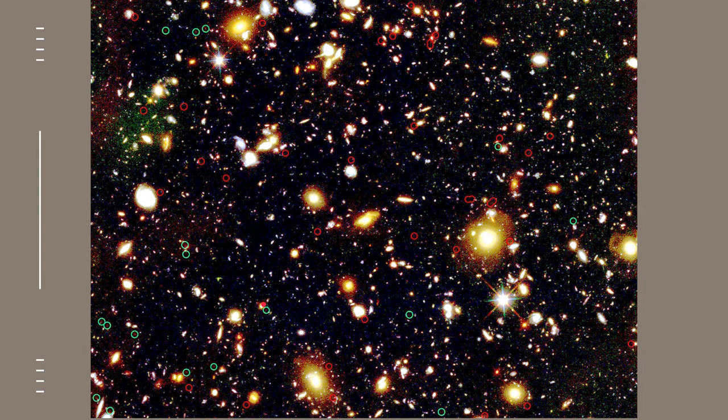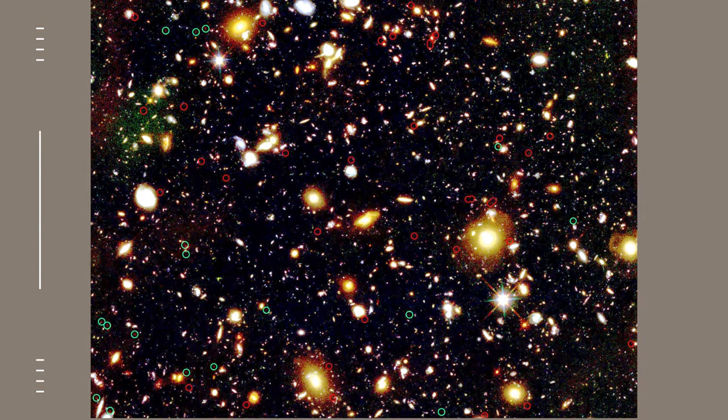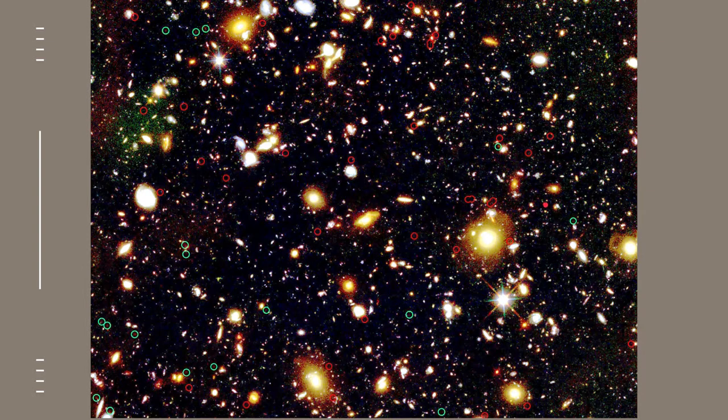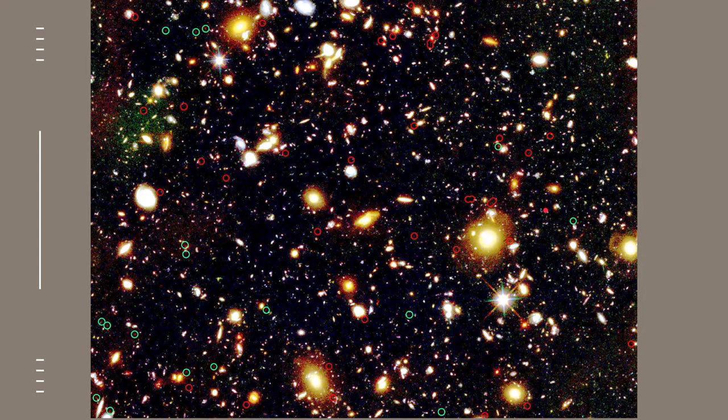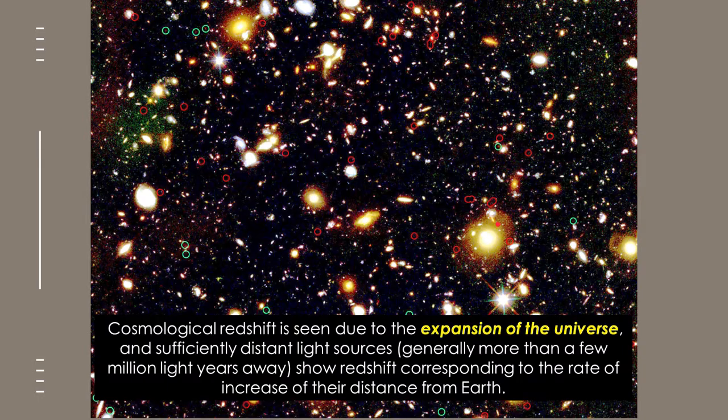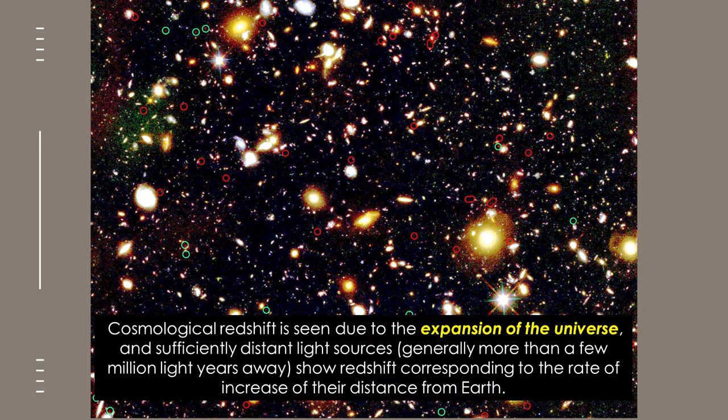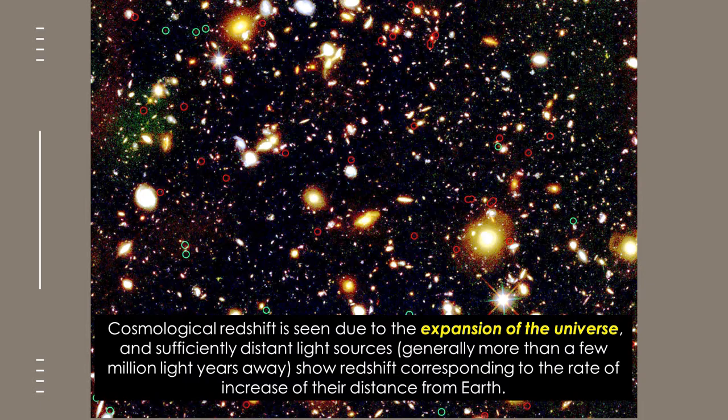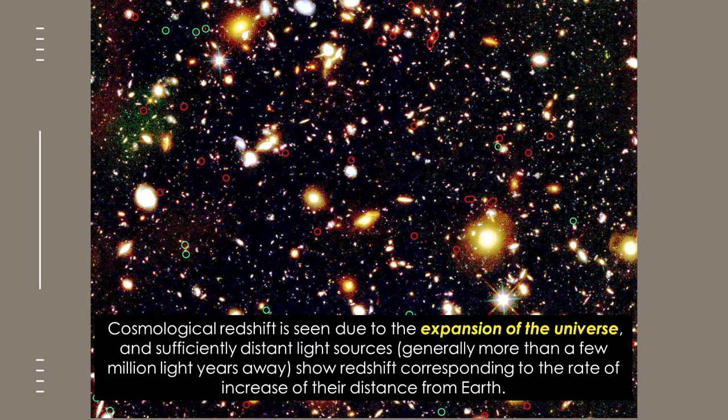Red shift can be observed by the following image. Those galaxies that are circled red are said to be turning red because they are moving farther away from us. Cosmological red shift is seen due to the expansion of the universe. It means they are turning red because they are moving away from us. It also shows that a red shift corresponds to the rate of increase of their distance from Earth or from us, the observers.